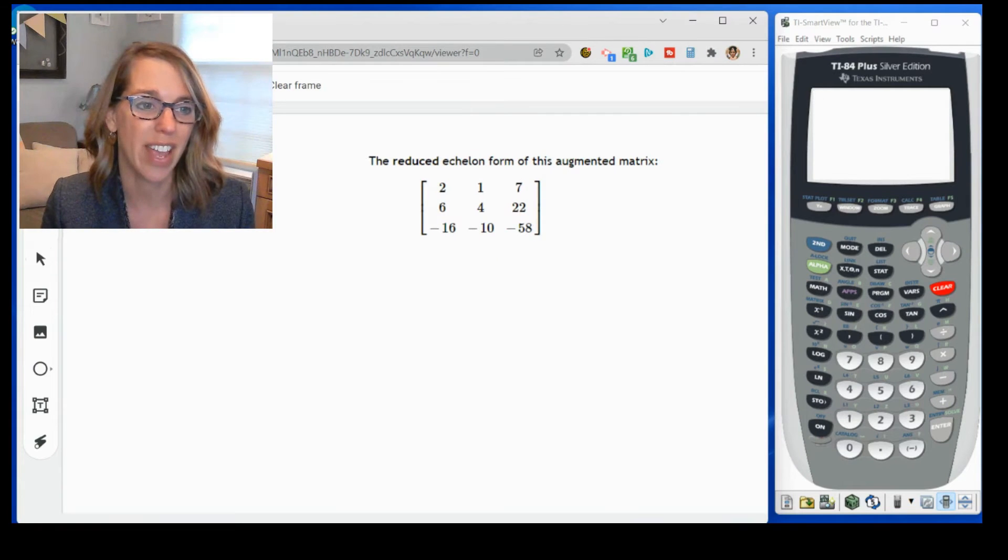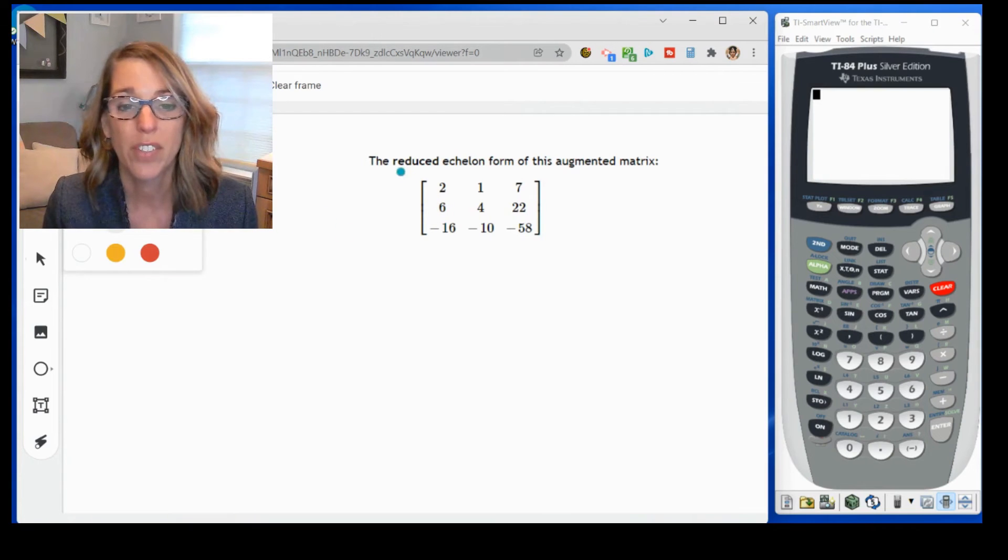We've got this first matrix here, and we're asked to put this into reduced row echelon form. So all I've got to do is to take this matrix and put it into the calculator.